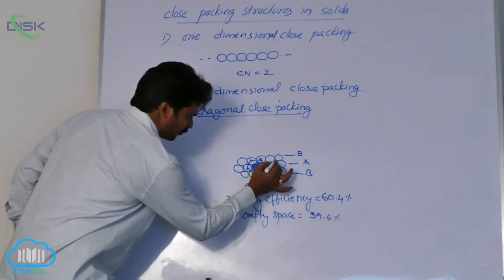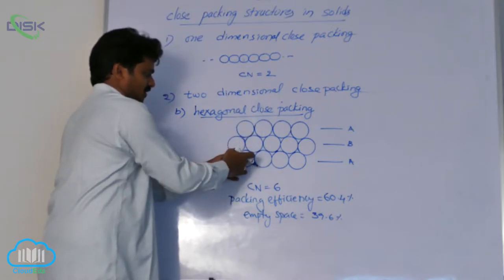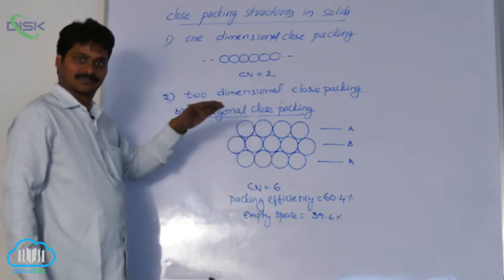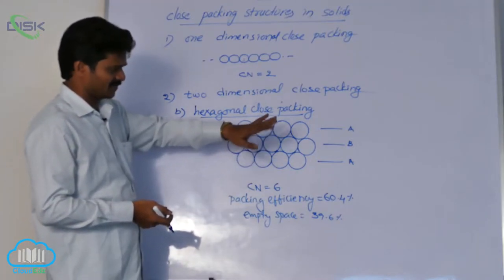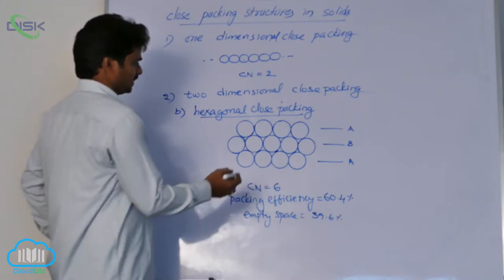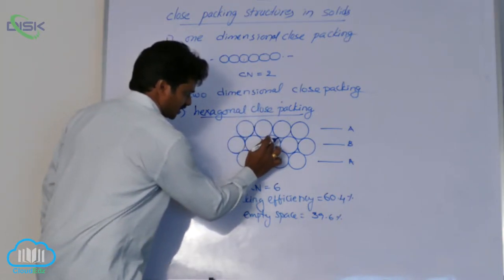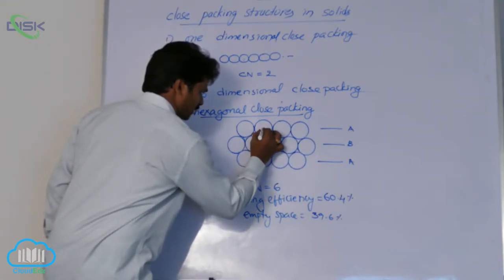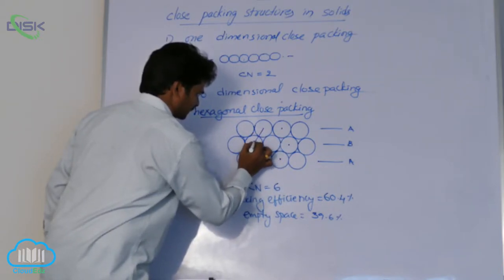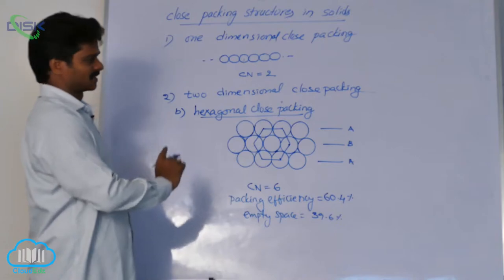In hexagonal close packing there are also some voids. The spheres of the first row and third row are in alignment, giving an AB AB AB type row structure with coordination number 6. It is called hexagonal close packing because if you consider any sphere that is in contact with six other spheres and join the centers of the nearest spheres, they form a regular hexagon.